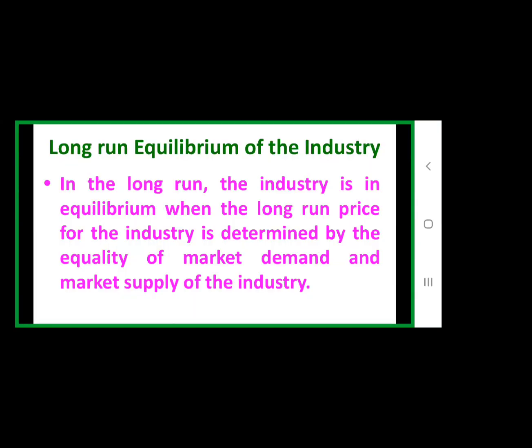Next, industry equilibrium. In the long run, the industry is in equilibrium when the long run price for the industry is determined by the equality between market forces — market demand and market supply. So, in the long run, market demand and market supply are two different parts.